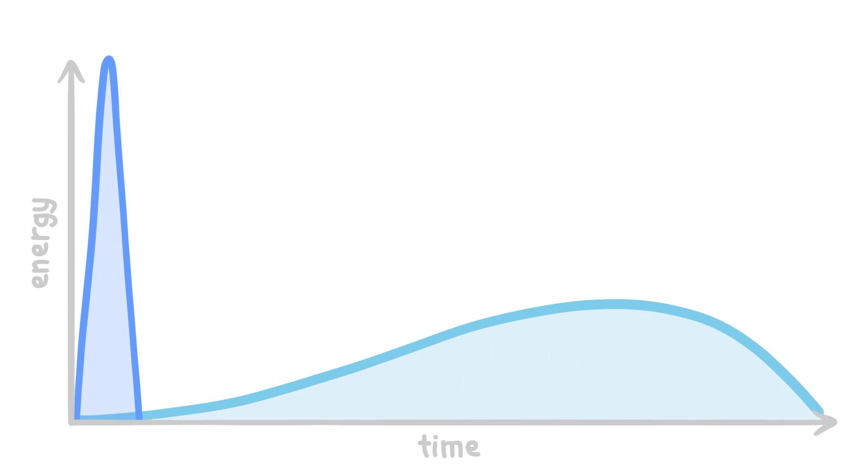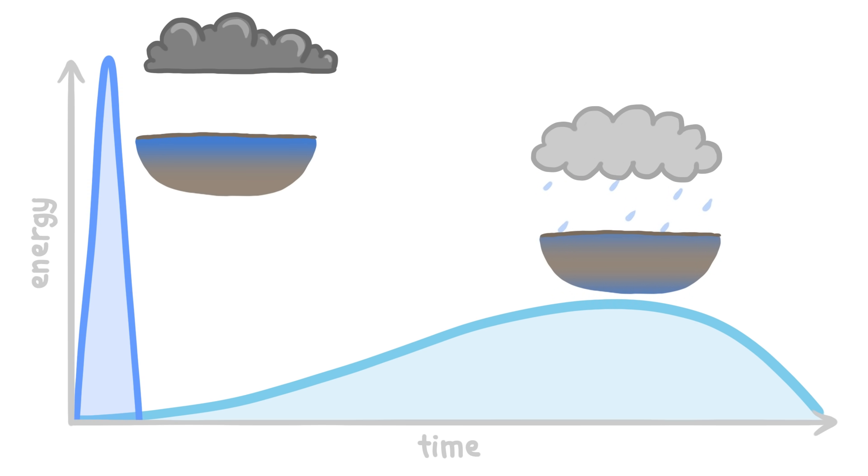It's just like how a torrential downpour can be intense, but a gentle rain that lasts for hours can actually dump way more water overall.